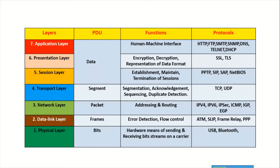Starting from the top, the application layer is purely end-system related. It is a human-machine interface. For example, to open a Facebook account, you open a web browser — all web browsers such as Google Chrome and Mozilla Firefox work at the application layer. Protocols used here include HTTP, FTP, HTTPS, SMTP, SNMP, DNS, Telnet, and DHCP.